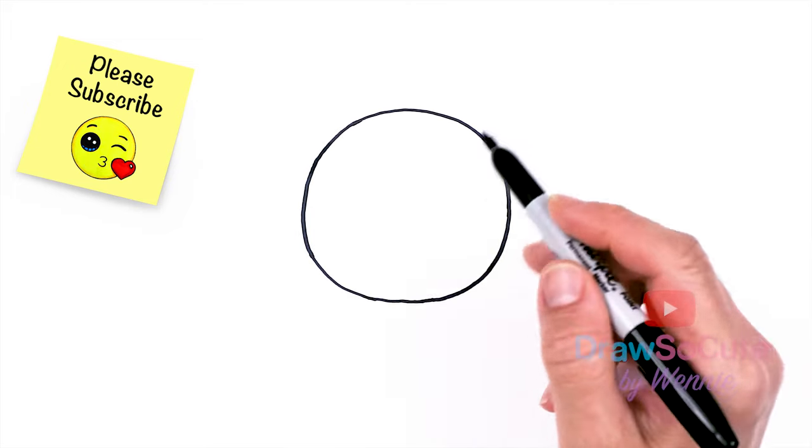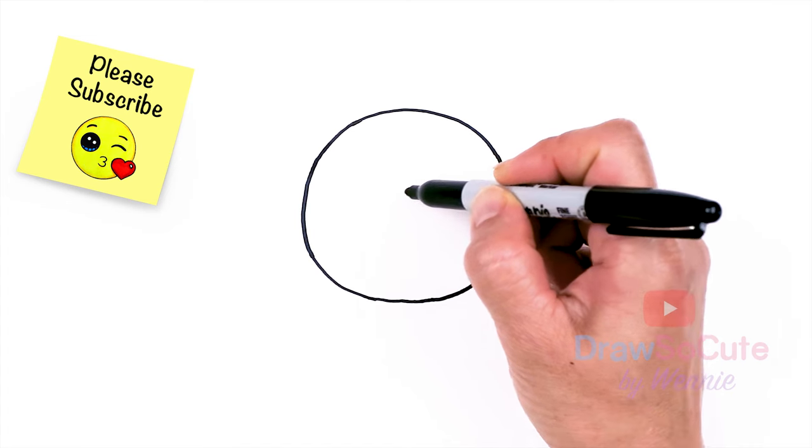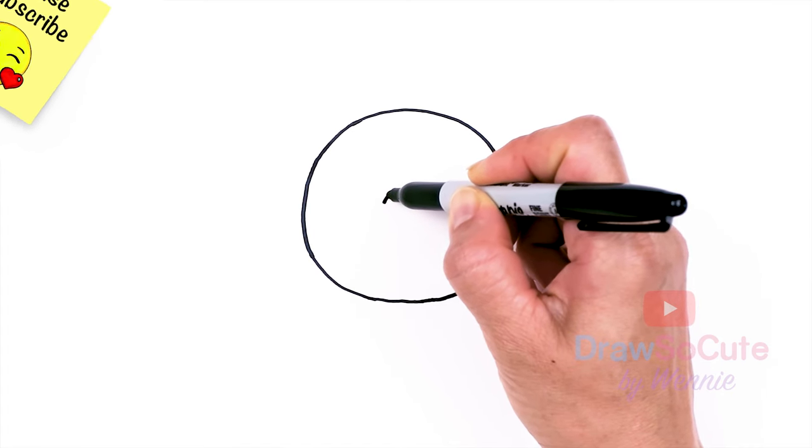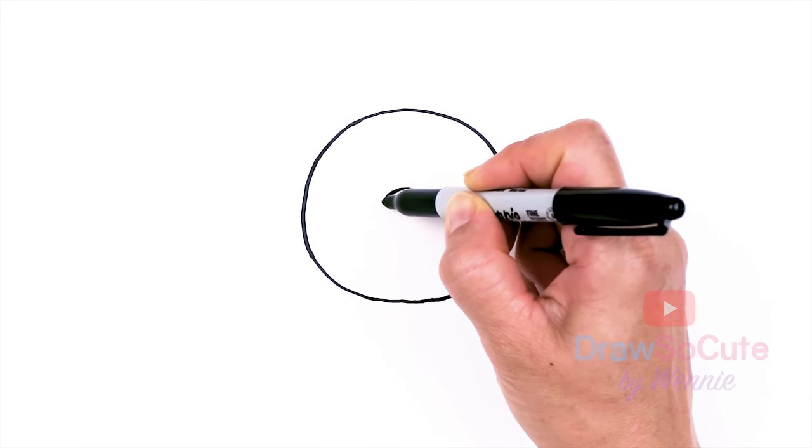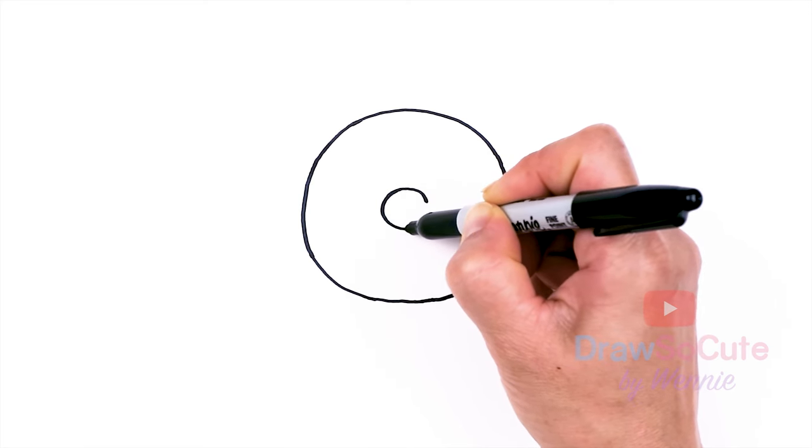Okay, so now that I have this circle in, I'm going to come to the center, say about right here. I'm just going to go ahead and draw my donut hole. I'm not going to make it very big because I need enough room to put in some eyes.